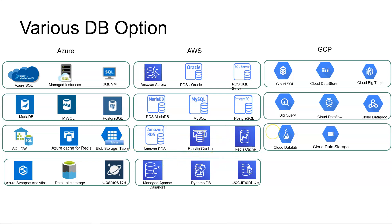On AWS, Amazon Aurora and Redis Cache are available — Redis maintains in-memory key-value data structures for faster access and better performance. For NoSQL, AWS offers DocumentDB and DynamoDB, as well as managed Apache Cassandra. On GCP, options include Cloud SQL for relational data, Cloud Datastore, Cloud Bigtable for big data (similar to DynamoDB/DocumentDB), and BigQuery for data warehousing, similar to Synapse Analytics.